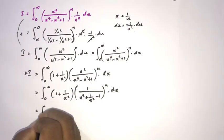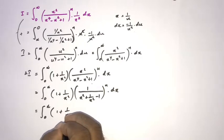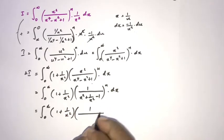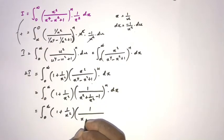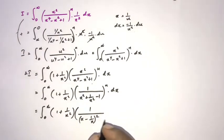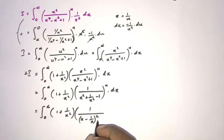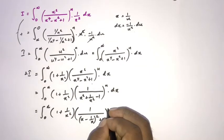We write x squared plus 1 over x squared as a perfect square: it equals x minus 1 over x, quantity squared, plus 2. So x squared plus 1 over x squared minus 1 equals x minus 1 over x, quantity squared, plus 1. The integrand becomes 1 plus 1 over x squared over that expression, raised to the n-th power.